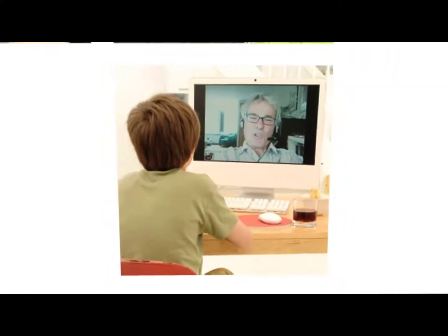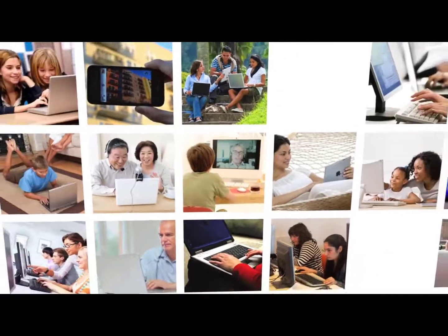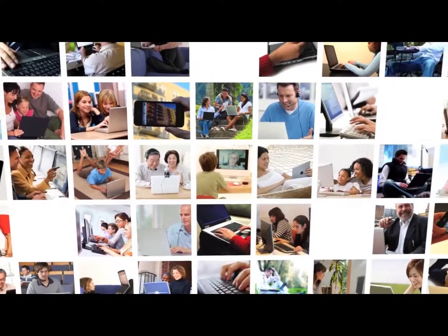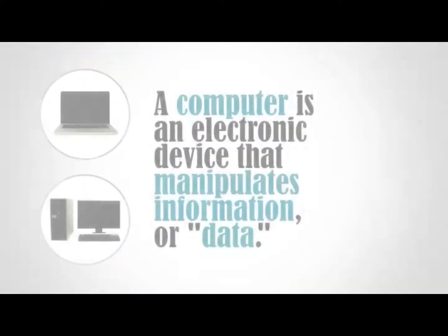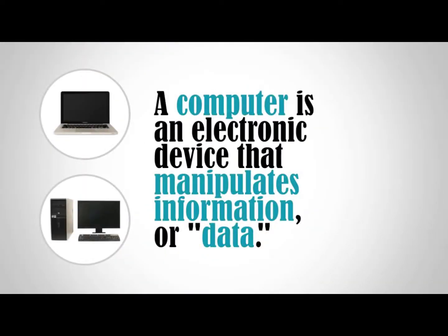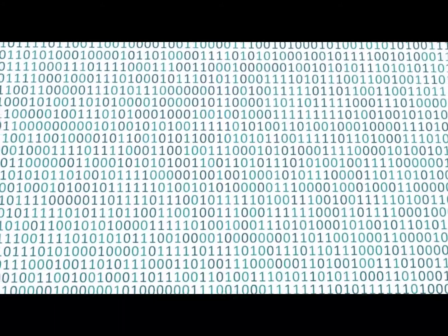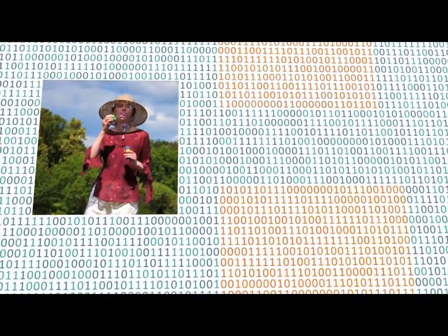Today, computers are all around us. From desktop computers to smartphones, they are changing the way that we live our lives. What exactly is a computer? A computer is an electronic device that manipulates information or data. The computer sees data as ones and zeros, but it knows how to combine them into more complex things, such as a photograph, a movie, a website, a game, and much more.